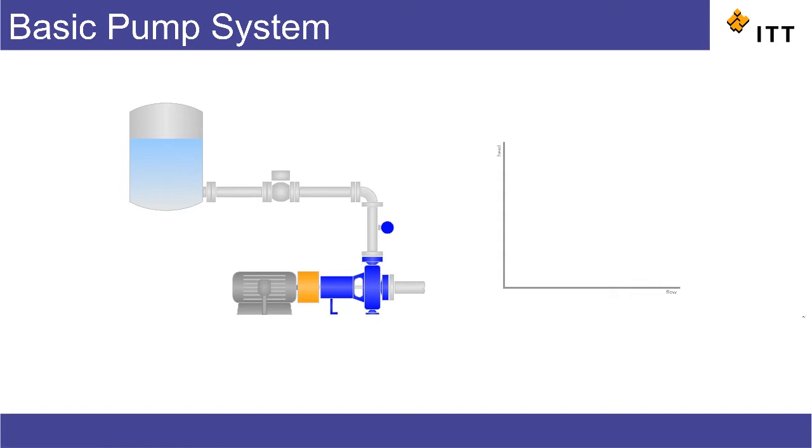The operating point of a pump is defined by the intersection of the system curve and the pump curve. In a simple application like this where you're pumping into a tank, the system curve is made up of two things.